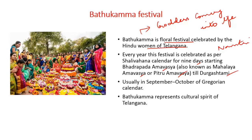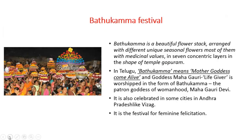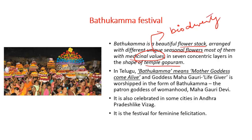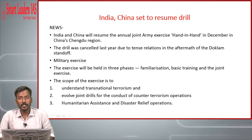Usually this period lies in September-October of the Gregorian calendar. Bathukamma represents the cultural spirit of Telangana. It is a beautiful flower stack arranged with different unique seasonal flowers — most of them with medicinal values, indicating the biodiversity of the state — in seven concentric layers in the shape of a temple gopuram. Goddess Maha Gauri, the life-giver, is worshipped in the form of Bathukamma. This cultural practice also has a following in some cities of Andhra Pradesh like Visakhapatnam, and Bathukamma festival is a felicitation for feminine power.